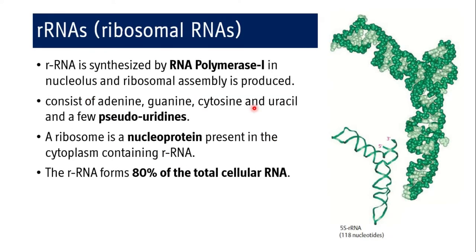What are ribosomal RNAs? The ribosomal RNA, or rRNA, is synthesized by RNA polymerase 1 in the nucleolus, and ribosomal assembly is produced. Ribosomal RNAs consist of adenine, guanine, cytosine, and uracil, like other RNAs.